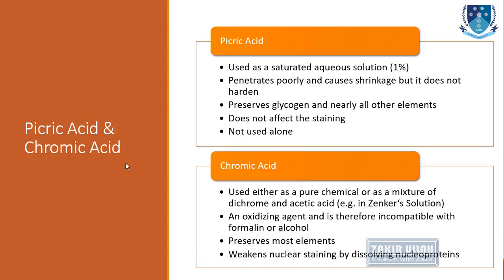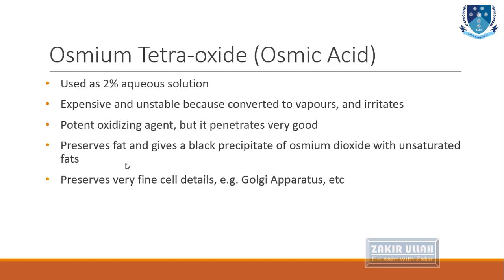Chromic acid is used either as a pure chemical or as a mixture with dichromate or acetic acid, for example in Zenker solution. It is a strong oxidizing agent and cannot be used with formalin or alcohol. It is used for the preservation of most elements; however, it weakens nuclear staining because chromic acid dissolves nucleoproteins, so nuclear staining cannot be performed after chromic acid fixation.